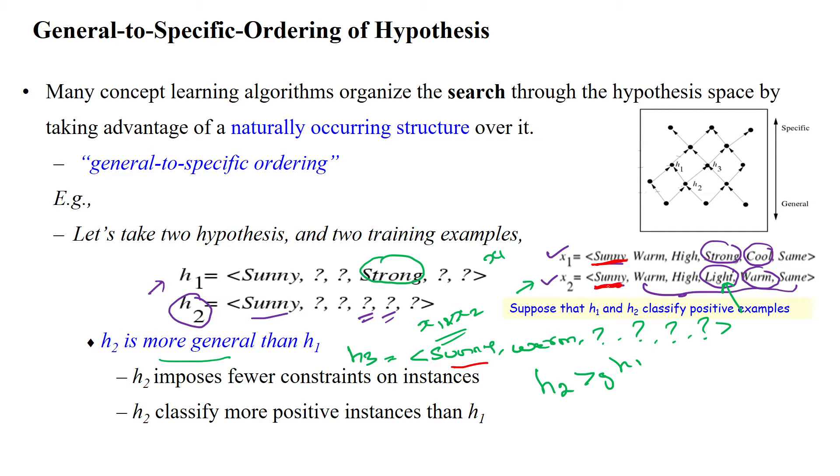Here it is warm, it is also warm, then remaining all are general constraints. So it will accept all the values in these four attributes.